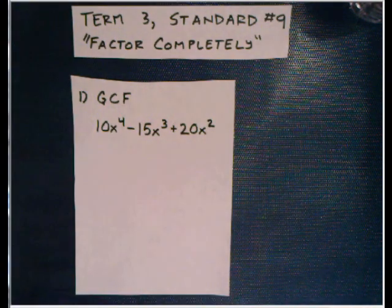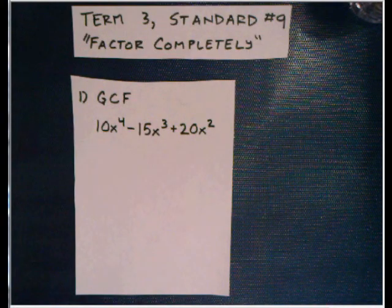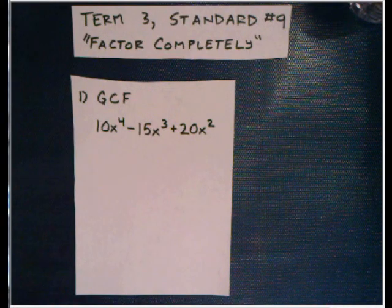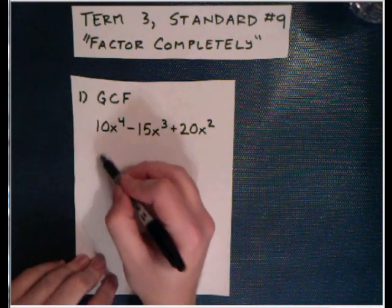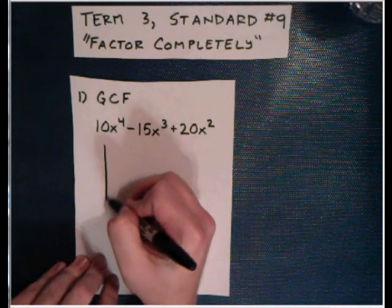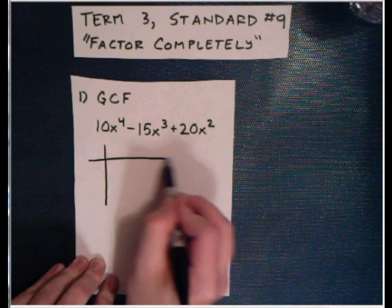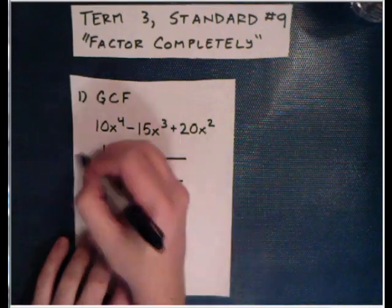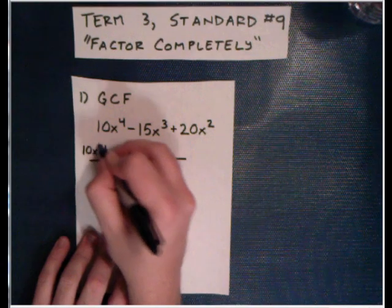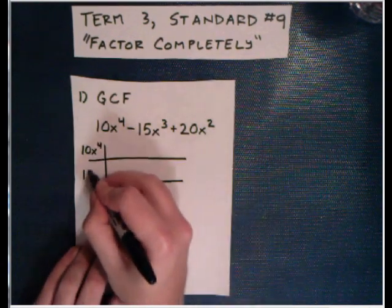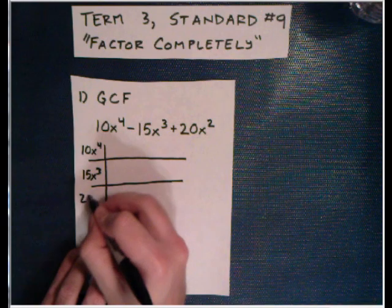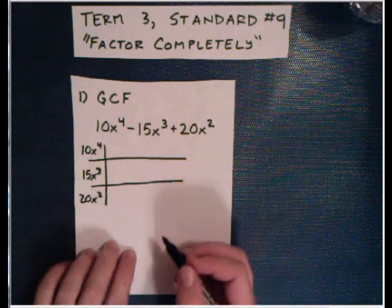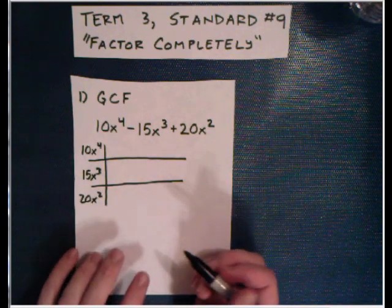So there's a polynomial that we may need to factor: 10x⁴ - 15x³ + 20x². This could be question number nine on the standard quiz. What we want to do is we want to GCF factor. If you've watched video 10, you already know that this means we're going to create a GCF table and see what comes out of each of these guys. So there's our table. We're going to put each of these terms in there.